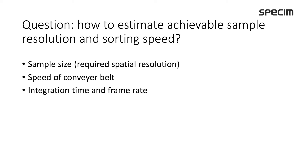Frame rate and integration time are related to each other and sometimes they are a compromise. If our process line is going, for example, two meters per second and our samples have a certain size, what is the frame rate we need to have enough spatial resolution? Let's calculate that. One question we always get is how to estimate the achievable sample resolution and sorting speed. This of course depends on the speed of the conveyor belt, the sample size, and the required spatial resolution on the sample.